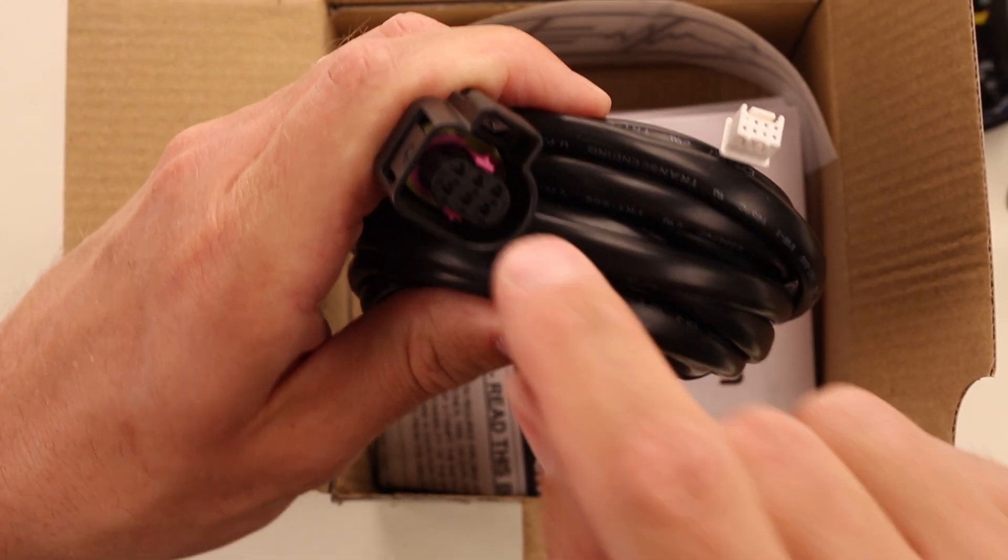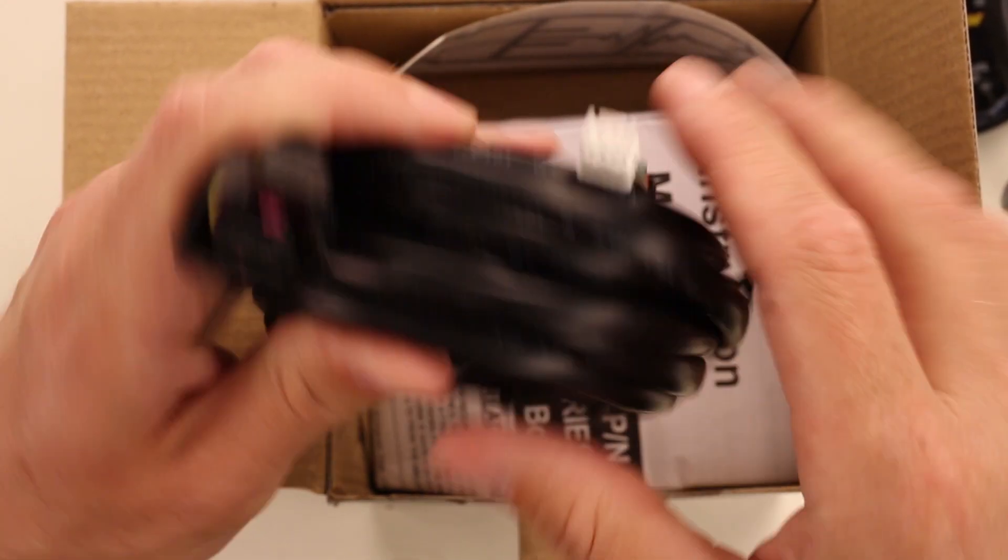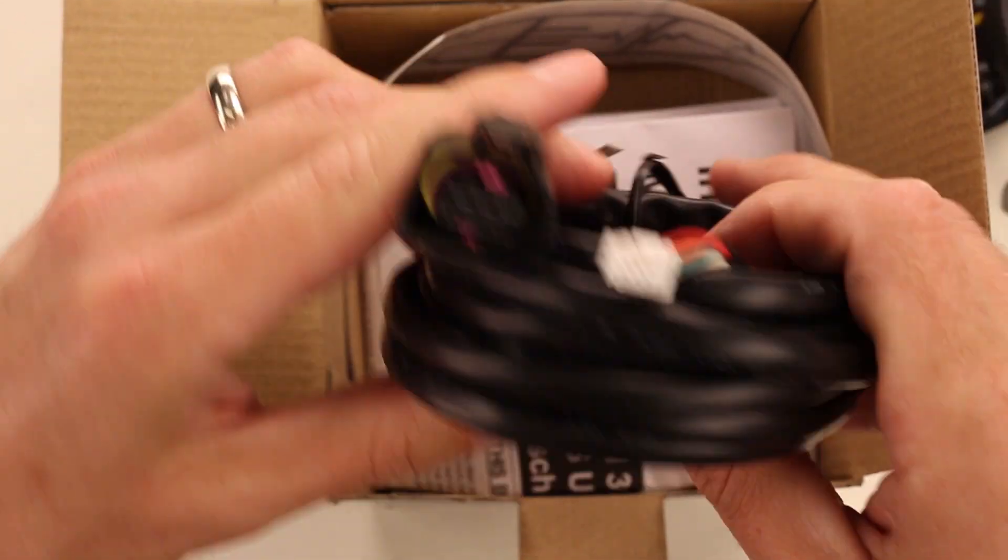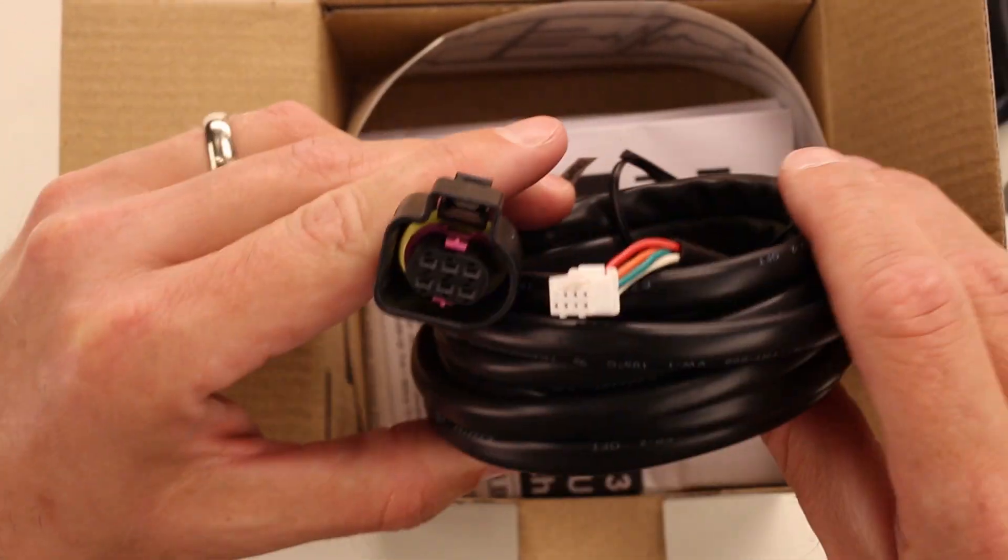Here's the wiring harness that connects the O2 sensor to the back of the gauge. And there's plenty of length to put this in any engine compartment to any dashboard.